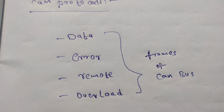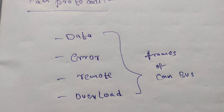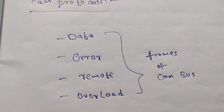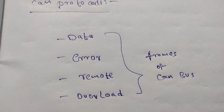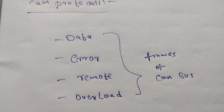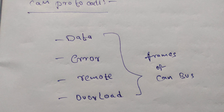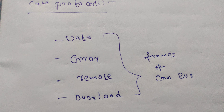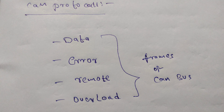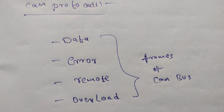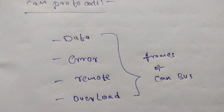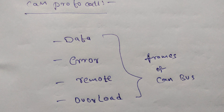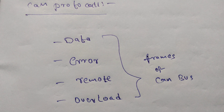Error frames are the frames that are sent by the receiver after reception of the data frame, if there is any CRC error or any other error detected. The error frame will be transmitted from the receiver over the bus.